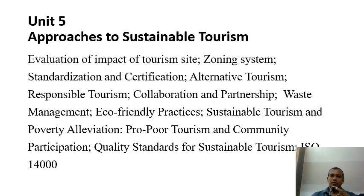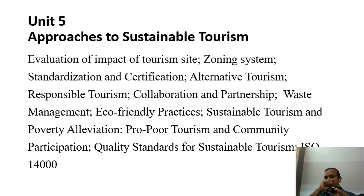The fifth unit covers the approaches of sustainable tourism, including the evolution and impact of tourism sites, zoning systems, and standardization of different tourism destinations. Standardization focuses on certification processes like the Blue Flag, Green Tag, and World Adventure Tag. Responsible tourism is also a key discussion — responsible tourism and sustainable tourism go hand in hand. The last part covers different concepts of sustainable tourism such as waste management and eco-friendly practices.